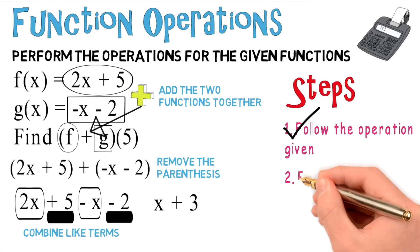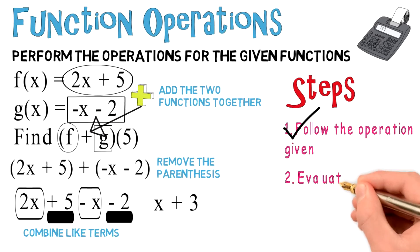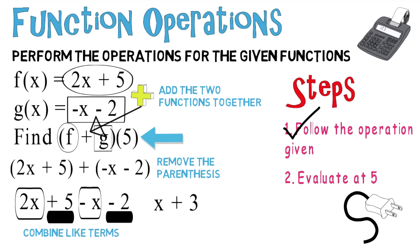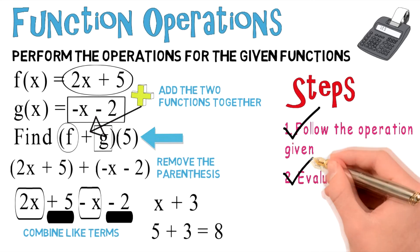And don't forget, it says evaluate at 5. x plus 3. So you're going to plug in 5 for x, and you wind up getting 8. And you can check that off.